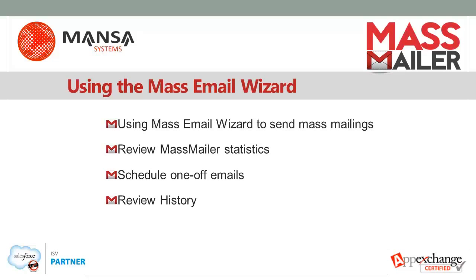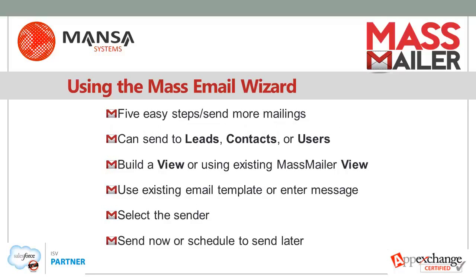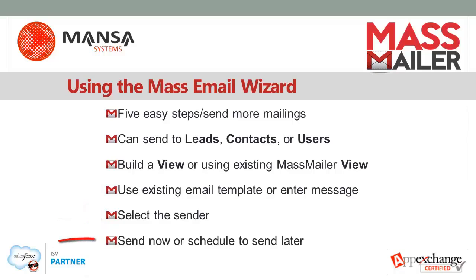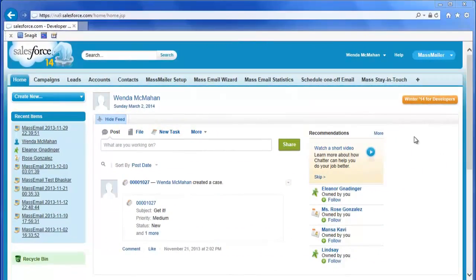The MassMailer application, available from a private link on the AppExchange, extends the capabilities and limits of Salesforce's mass mailing functions. With MassMailer's Simple Wizard, there are five easy steps and you can send more than 250 mailings at a time. You can send to leads, contacts, or users based on a view that you build in MassMailer and can reuse with other mass mailings. On the MassMailer app which you installed from the AppExchange, click the Mass Email Wizard tab.